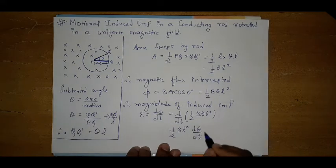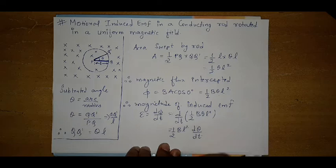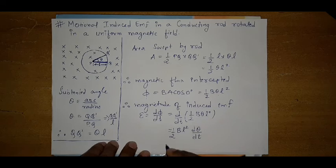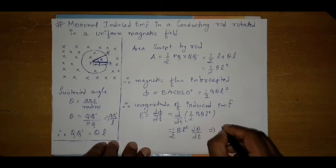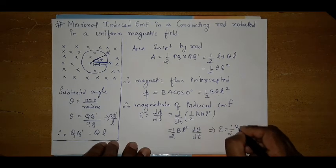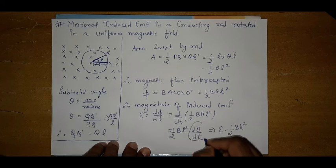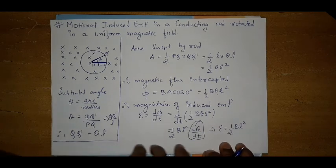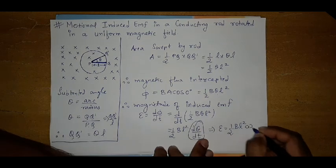This is angular displacement. The rate of change of angular displacement is angular velocity. So it will become epsilon is equal to half into B L square, where d theta by dt is angular velocity, which is omega.